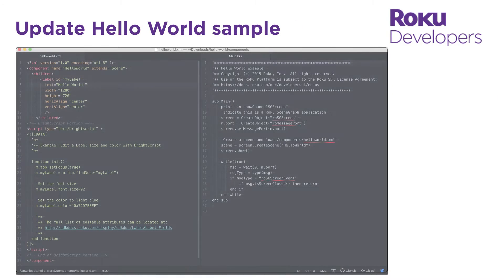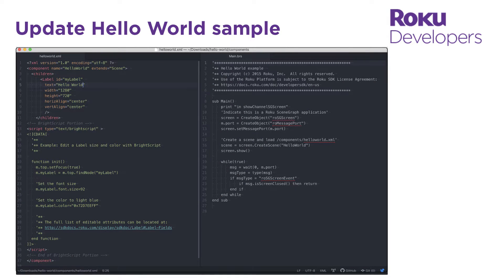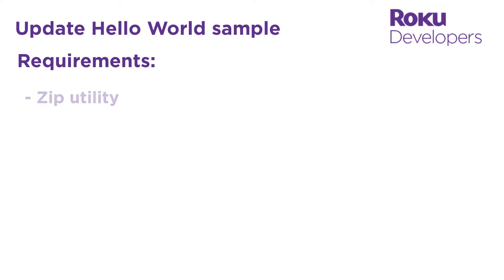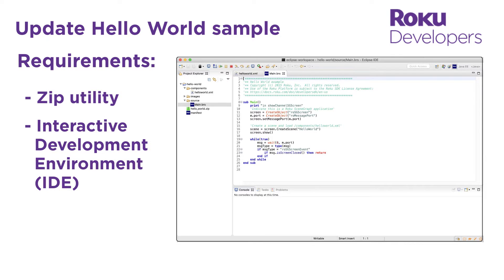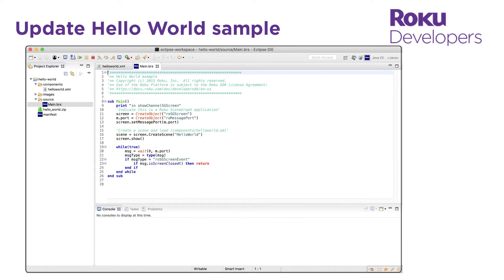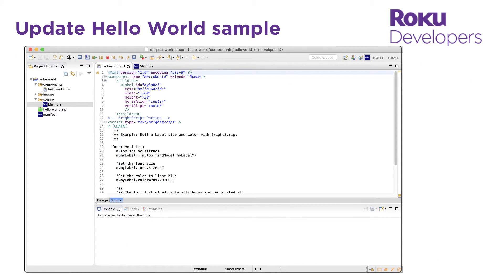You are now ready to create your first Roku channel by modifying the Hello World sample. To get started, you just need a zip utility to extract and archive channels and an IDE such as Eclipse, Atom, or Visual Studio to program the channel. Roku's Eclipse plugin, along with some other Roku plugins for popular IDEs, are linked from the resources folder.